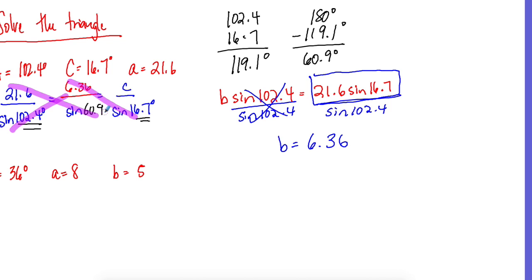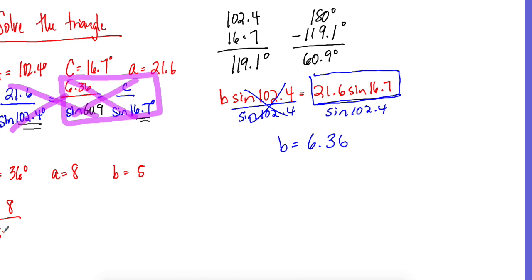Now that we know b = 6.36, use the same ratio to cross multiply and solve for c. For the next problem below, we only have one angle, so set up: 8 over sine 36 equals 5 over sine B equals c over sine C, and solve from there.